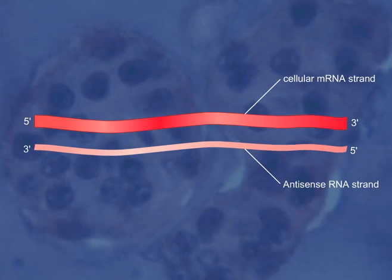The antisense RNA can come from three sources. First, it can be introduced into cells by researchers.